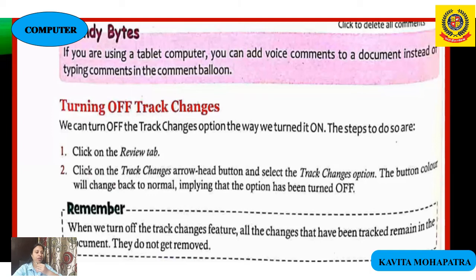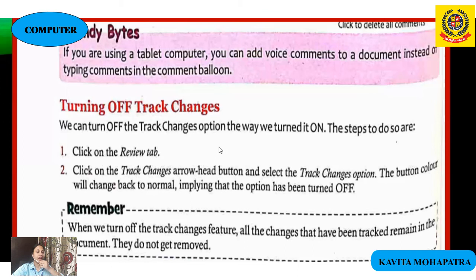How to turn off track changes: click on the Review tab, then click on the Track Changes arrowhead button to select the Track Changes option. The button color will change back to normal, implying that the option has been turned off.